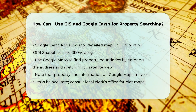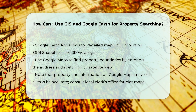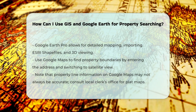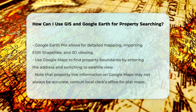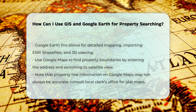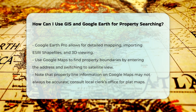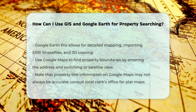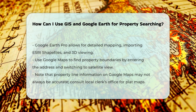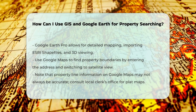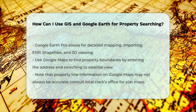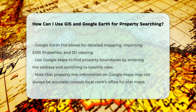Finding property lines on Google Maps. If you need to find the exact boundaries of a property, you can use Google Maps. Enter the property's address into Google Maps, switch to the satellite view, and zoom in until the property lines appear. However, note that this information is not always available, and for more accurate results, you may need to review the property survey or check with your local clerk's office for the plat map.